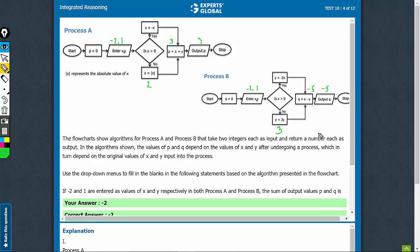The sum of values p and q is 3 minus 5, that is minus 2. So, the first correct answer is minus 2.